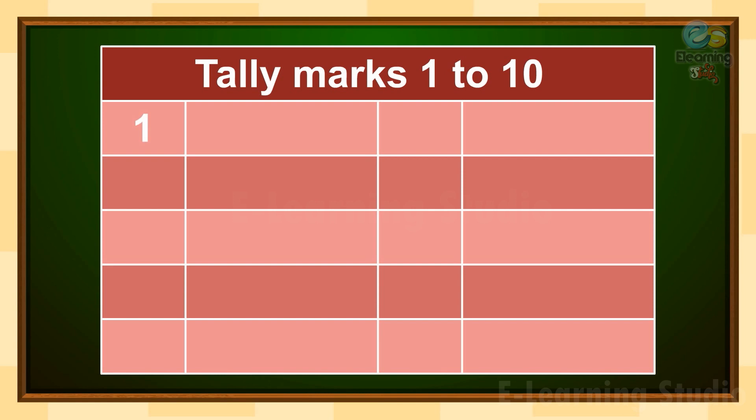Like, it is one written here, so we can make one vertical line here. This is the tally mark and this represents number 1. To represent number 2, we make 2 tally marks: 1 and 2.